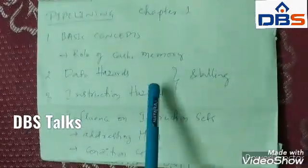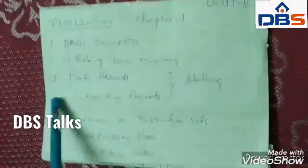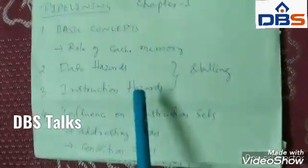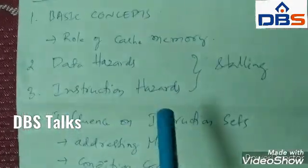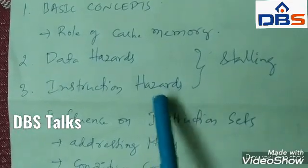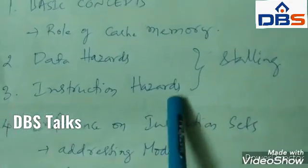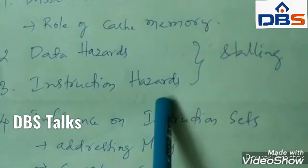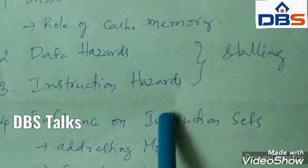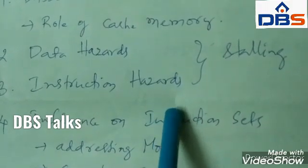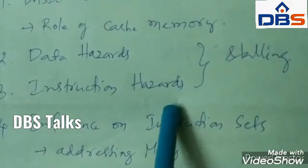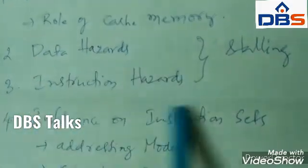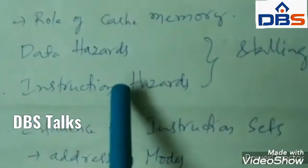Coming to the third topic: Instruction Hazards. Sometimes instructions are also delayed due to cache memory as well as primary memory. At that time, instruction hazards occur.